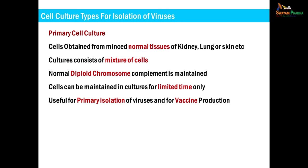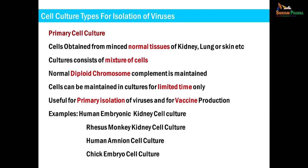The various types of cell cultures used for virus isolation are primary cell culture, diploid cell culture, and continuous cell culture. Primary cell cultures are obtained from normal tissue and contain a mixture of cells susceptible to many viruses, making them very suitable for primary isolation. However, these cells can only be maintained for a limited time, making them difficult and expensive to use. They can also be used for vaccine preparation. Examples include human embryonic kidney, rhesus monkey kidney cell culture, human amnion cell culture, and chick embryo cell culture.